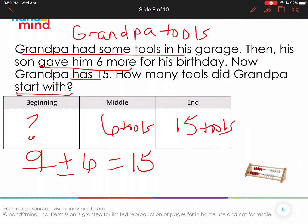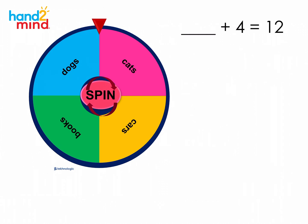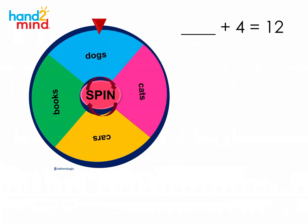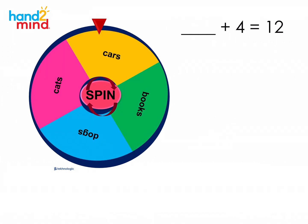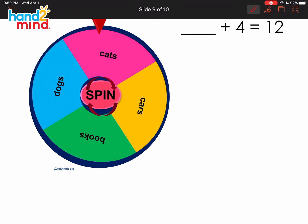So we're going to do something a little bit different this next time. And this is going to be using a spinner. And we're going to write our own story using the number sentence up in the corner. So the spinner is going to tell us what our story is going to be about. So here we go. I'm going to spin. Oh, it's going to be about cats.